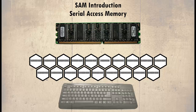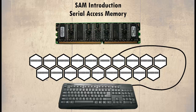Let's connect a keyboard — when a key is pressed, the binary code for that key is sent to a specific memory cell, which we shall call the key cell location. So if we are using a word processing package, the application can look at the key cell location and know which key has been pressed.